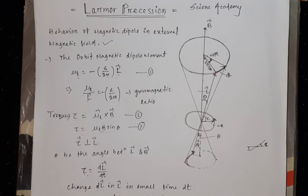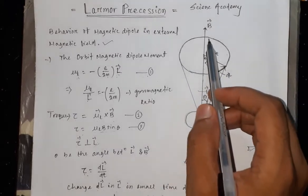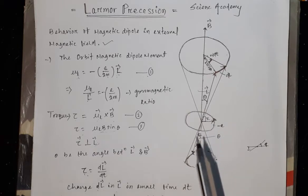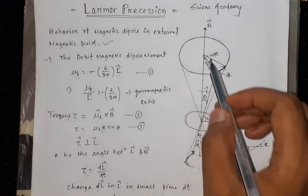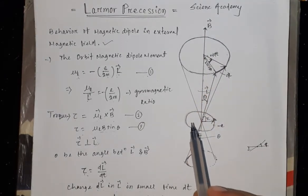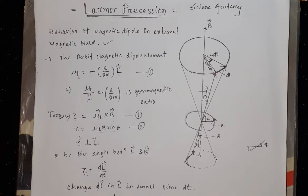When an atom is placed in an external magnetic field, the electron orbit precesses about the field direction as an axis. So the electronic system is inside the atom, and if the atom is placed inside a magnetic field, the electron orbit precesses about the field direction as an axis. This precession is called Larmor precession.